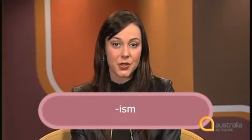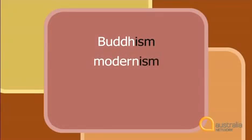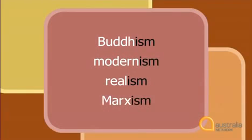We use the suffix '-ism' to talk about beliefs, ideologies or movements. For example: Buddhism, Modernism, Realism or Marxism. And the people who believe these ideas can sometimes be described by adding the '-ist' suffix — so we get Buddhist, modernist, realist or Marxist.